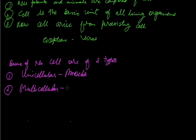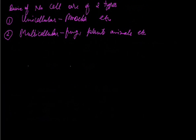Unicellular organisms like amoeba and paramecium, while the multicellular organisms are fungi, plants and animals.